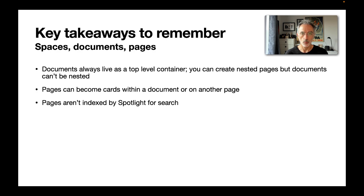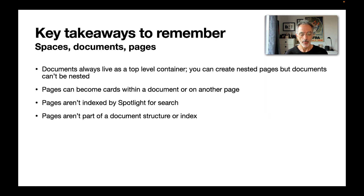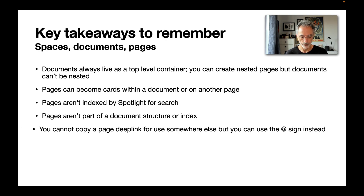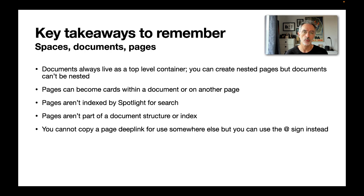Pages aren't indexed by Spotlight. So if you want to search for content with macOS, iOS, or iPadOS, only the document titles are being indexed — you'll have to use keywords contained in document titles. That's a pretty severe limitation of Craft. Pages are not part of the navigation or index structure on the left side of a Craft window; only documents appear in that index. You cannot copy a page deep link with right-click, but you can use the at sign to refer to a document or page to create a link and a backlink.